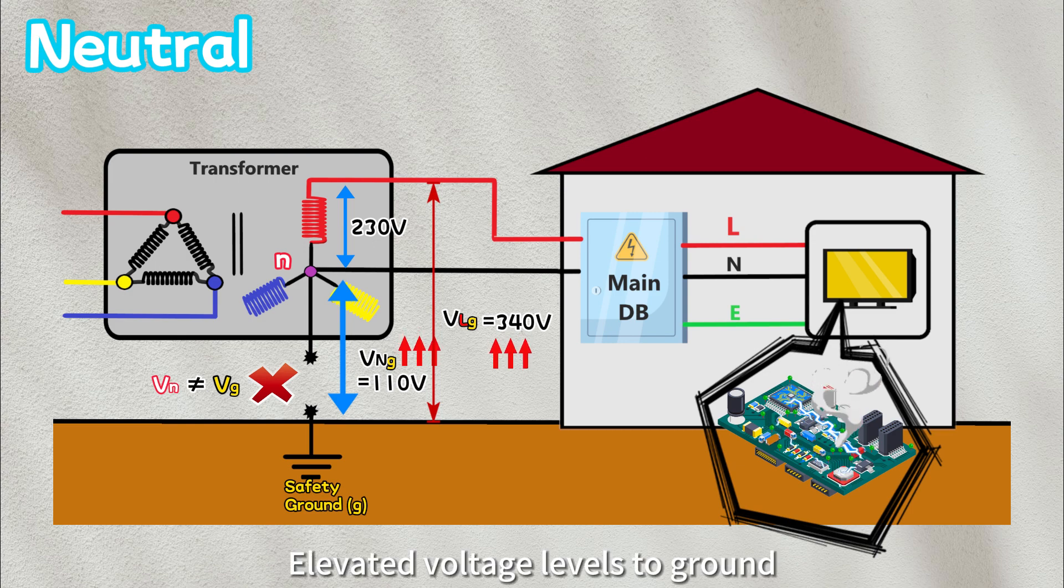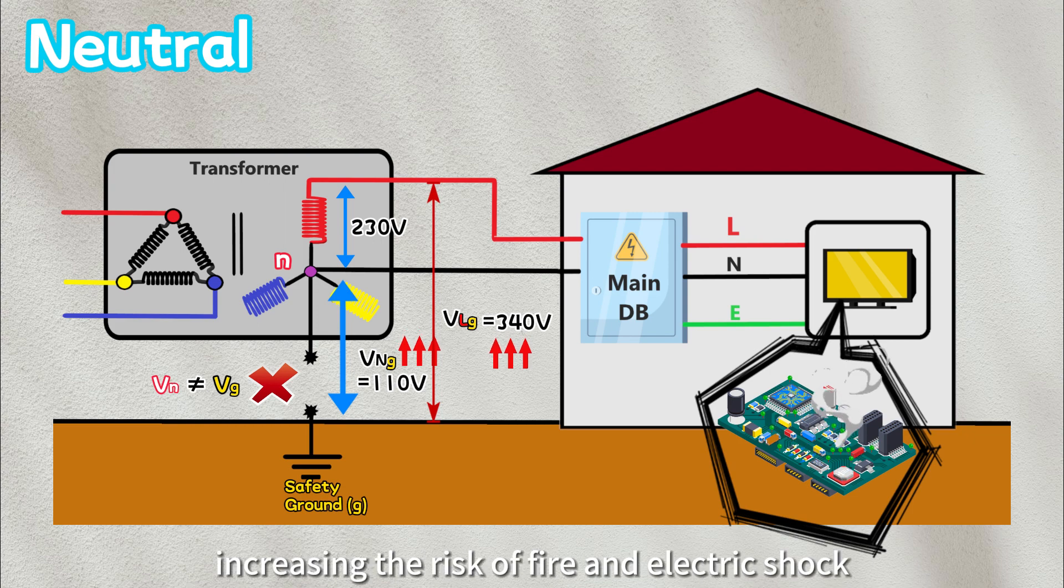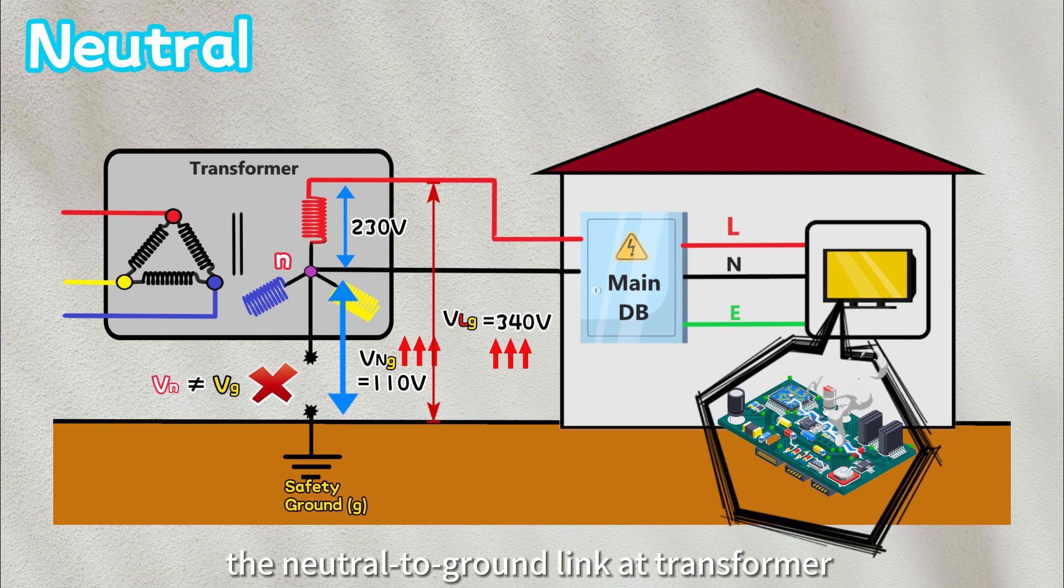Elevated voltage levels to ground can stress the insulation, potentially leading to flashovers, increasing the risk of fire and electric shock. Therefore, in the majority of systems, the neutral-to-ground link at transformer is deemed necessary.